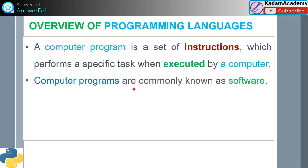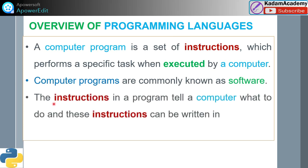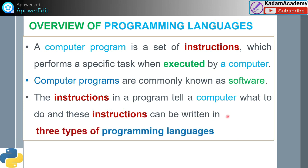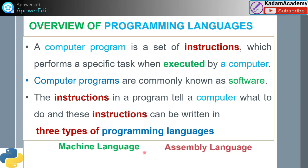Computer programs are commonly known as software, and the instructions in a program tell a computer what to do. These instructions can be written in three types of programming languages: machine language, assembly language, and high-level language.